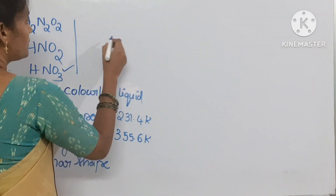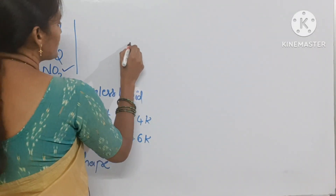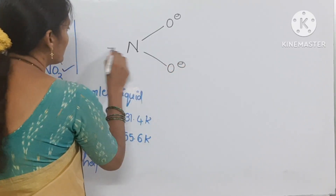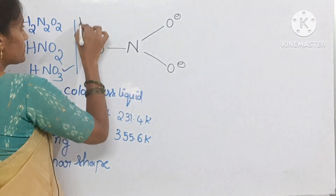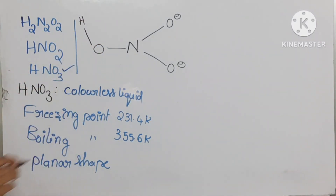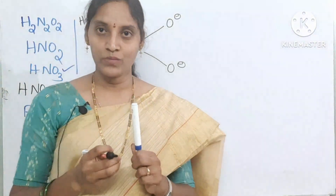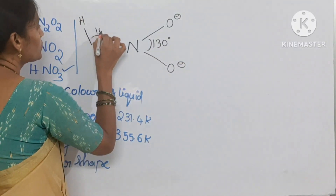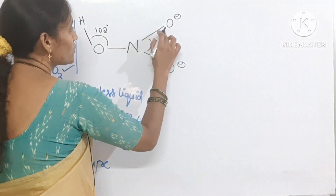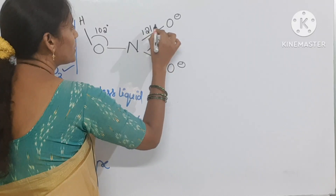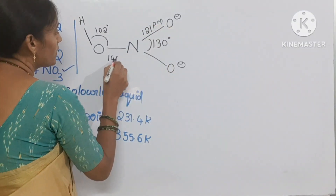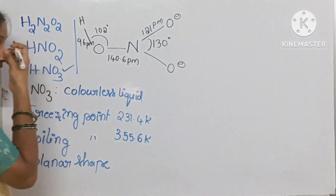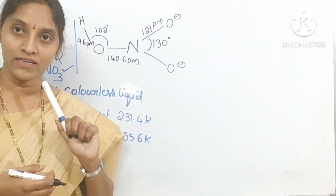You can see the structure here. Nitrogen attaches with two oxygen atoms carrying negative charge (O minus) and one more oxygen which attaches to hydrogen. Because of lone pair of electrons, bond angles deviate — here it is 130 degrees and here it is 102 degrees. The nitrogen-oxygen bond length is 121 picometers, here it is 140.6 picometers, and here it is 96 picometers. This covers its structure, shape, bond angles, and bond lengths.